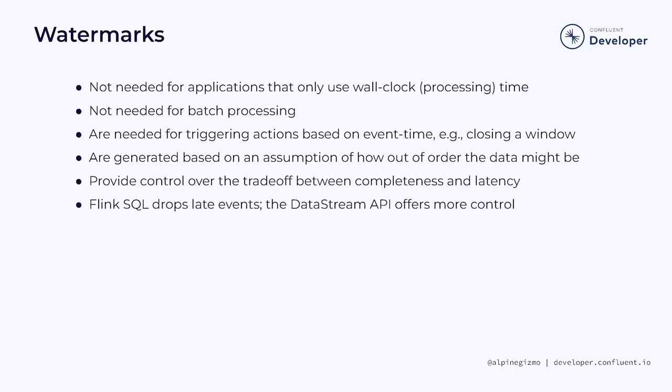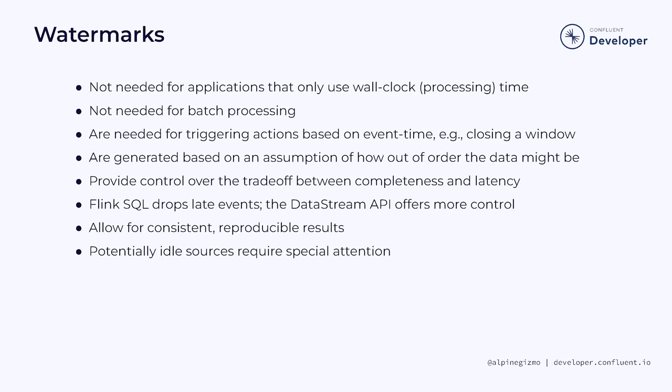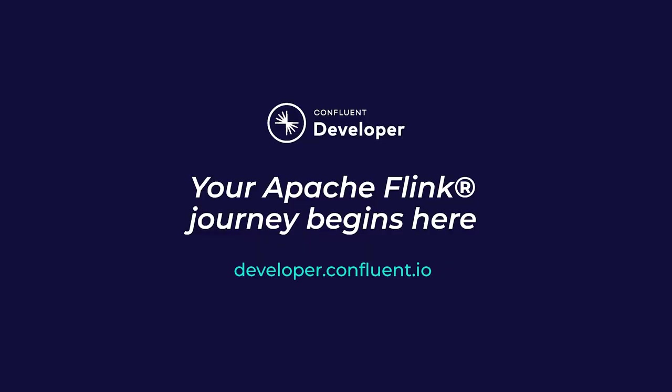Flink SQL drops late events, but the DataStream API gives you more control over how late events are handled. If you are able to avoid having late events, you can expect event time processing to produce deterministic, reproducible results. And finally, sources that might become idle need special attention. If you aren't already on Confluent Developer, head there now using the link in the video description to access other courses, hands-on exercises, and many other resources for continuing your learning journey.